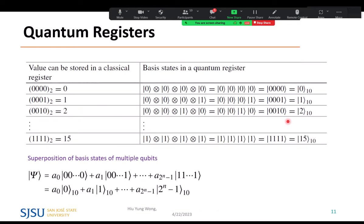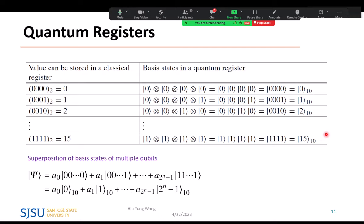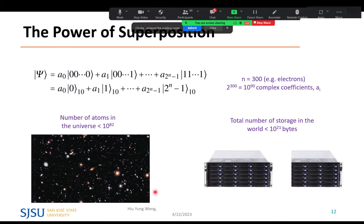In a classical register with four bits, you can represent 16 possible states — these are just basis states in a quantum computer. With four qubits, you can also represent a superposition, a linear combination of those 16 basis states, which requires 16 complex numbers to describe. With n qubits, you have 2^n basis states and need 2^n complex numbers to describe one state. This shows that there is a lot of information encoded in superposition.